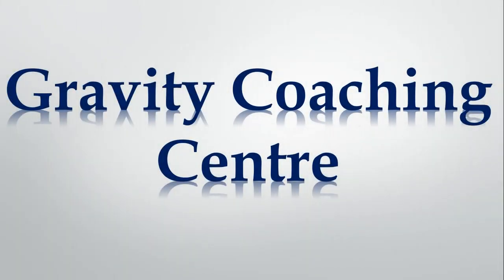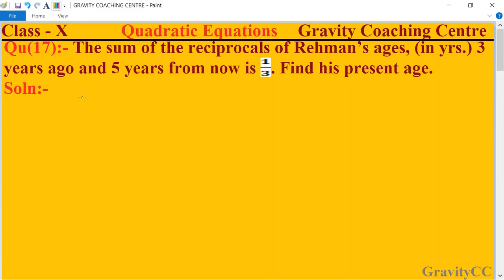Welcome to our channel Gravity Coaching Center, Class 10, Chapter Quadratic Equations, Question number 17. The sum of the reciprocals of Rehman's age in years, 3 years ago and 5 years from now, is 1 upon 3. Find his present age.